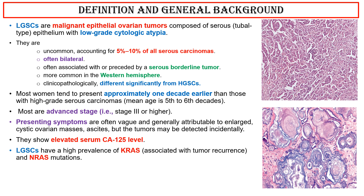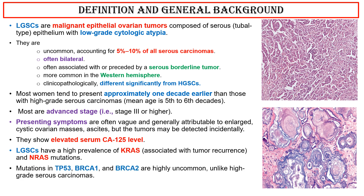Low-grade serous carcinomas have a high prevalence of KRAS mutations associated with tumor recurrence, and NRAS mutations. Mutations in TP53, BRCA1, and BRCA2 are highly uncommon, unlike high-grade serous carcinomas. They tend to have prolonged overall survival.